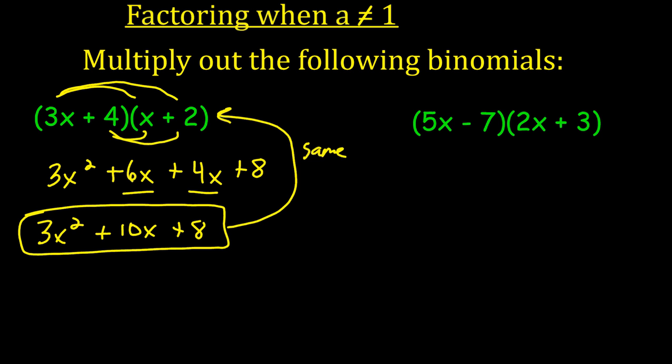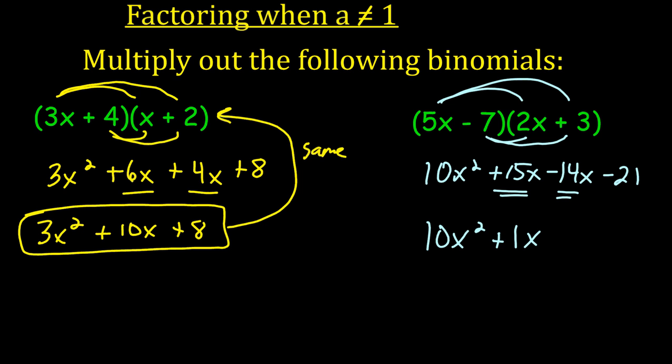Alright. Let's do the same thing with the second example. Distribute that 5x into both. So we get 10x squared and then plus 15x, and then we distribute that negative 7 into both. Negative 7 times 2x is negative 14x, and negative 7 times 3 is negative 21. So combining like terms, we get 10x squared plus 1x, which is 15 minus 14, and then minus 21.